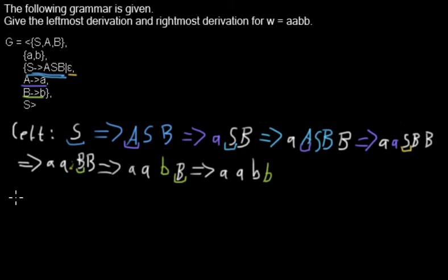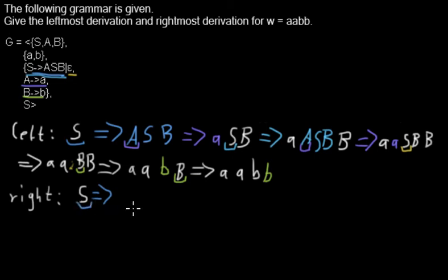Now let's do the same thing with the rightmost derivation. Again I start with S, and the first rule I apply is S expands to aSb. So I replace this S by aSb. Because we are doing the rightmost derivation, we will proceed by replacing the b, because it's the rightmost non-terminal in the string.